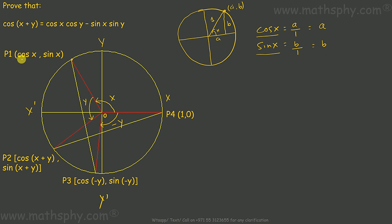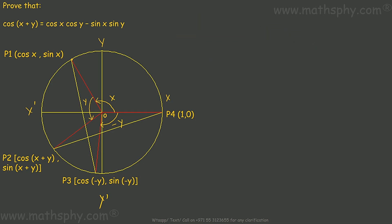So the coordinate P1 is (cos x, sin x). The coordinate P2 is (cos(x + y), sin(x + y)). The coordinate P3, going in the negative direction by angle y, would be (cos(-y), sin(-y)).